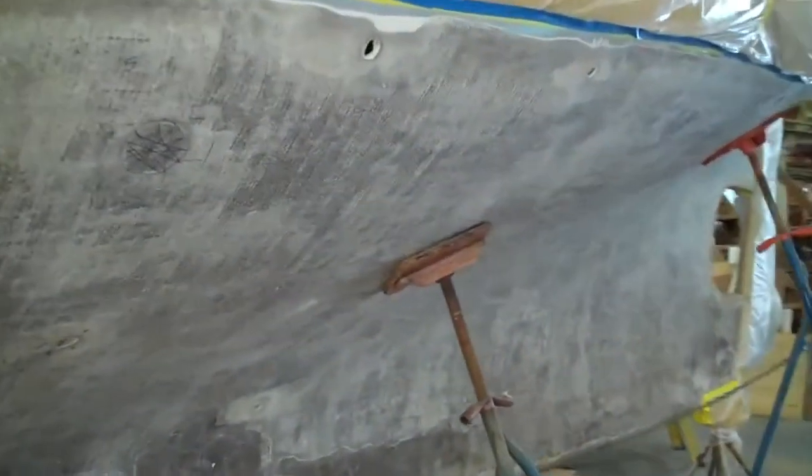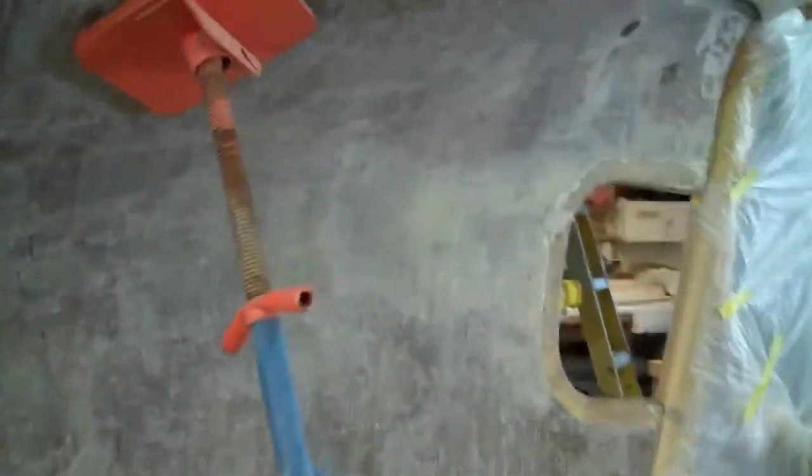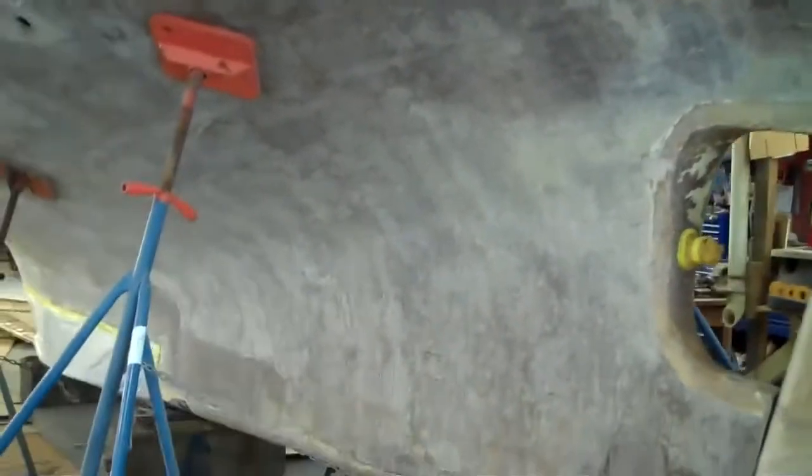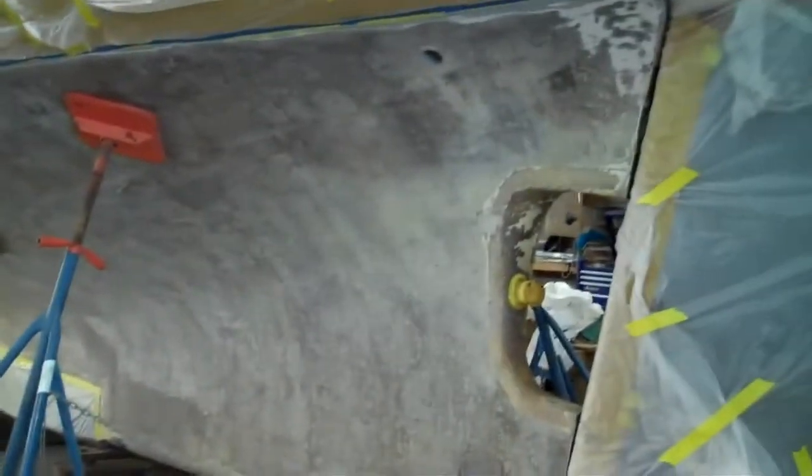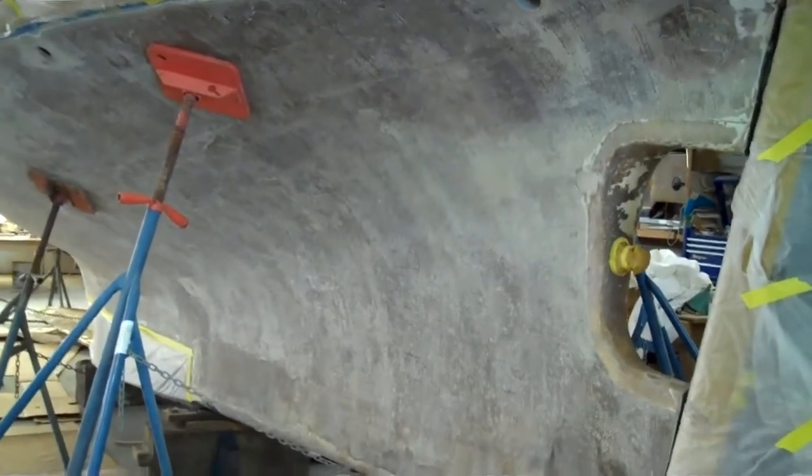In about two or three hours this should set up to the point where we can come back and start to fill in the low spots with a filled putty system. We're saturating it first because that will allow the resin to wet into all these dry spots. All this white that you see here is dry glass and we want the resin to fill in.